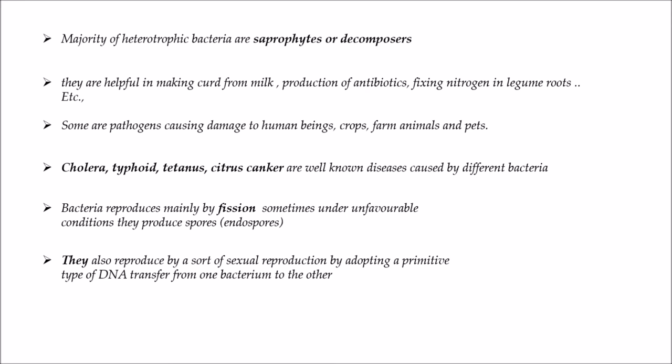Bacteria reproduce mainly by fission. Under unfavorable conditions they produce spores called endospores. They also reproduce by a primitive type of sexual reproduction involving DNA transfer from one bacterium to another.